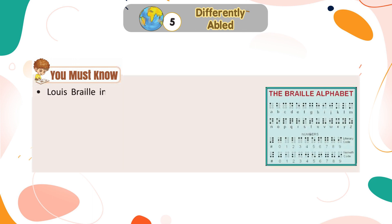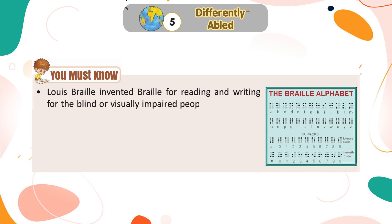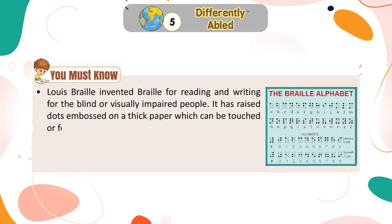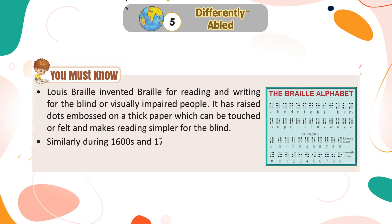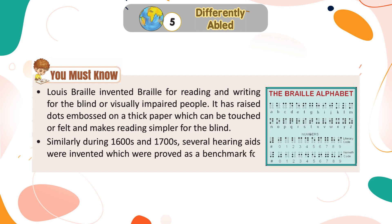You must know: Louis Braille invented the Braille system for reading and writing for the blind or visually impaired people. It has raised dots embossed on thick paper which can be touched or felt, making reading simpler for the blind. Similarly, during the 1600s and 1700s, several hearing aids were invented which proved to be a benchmark for deaf people.